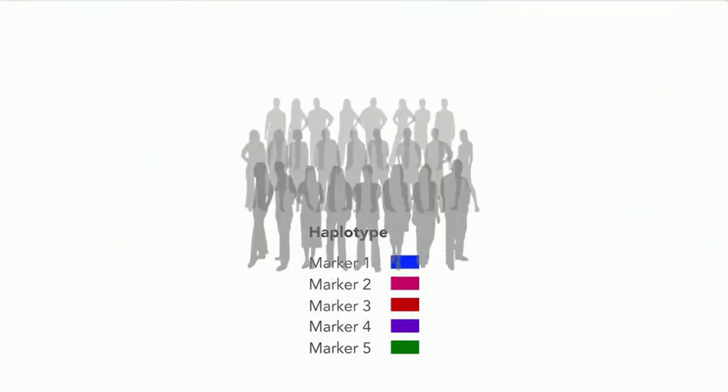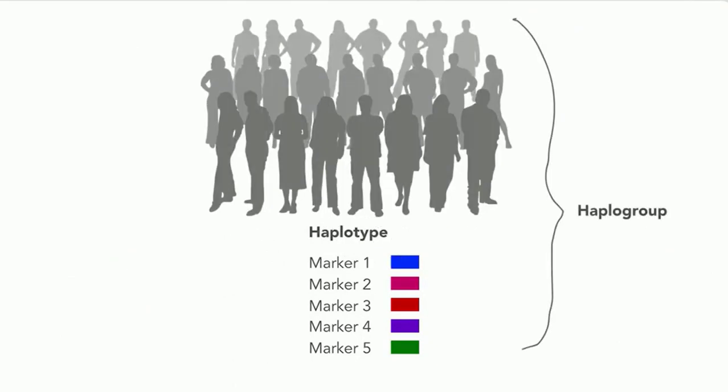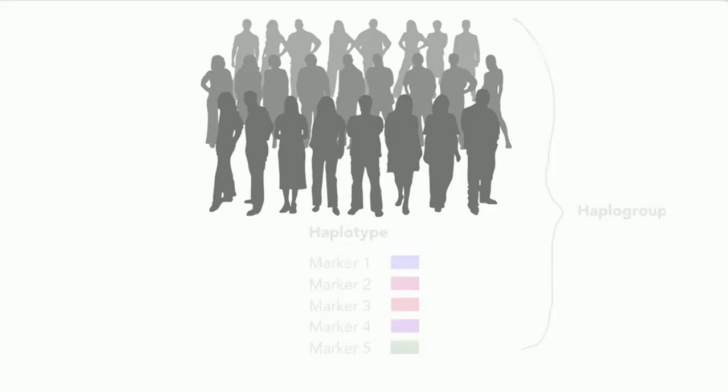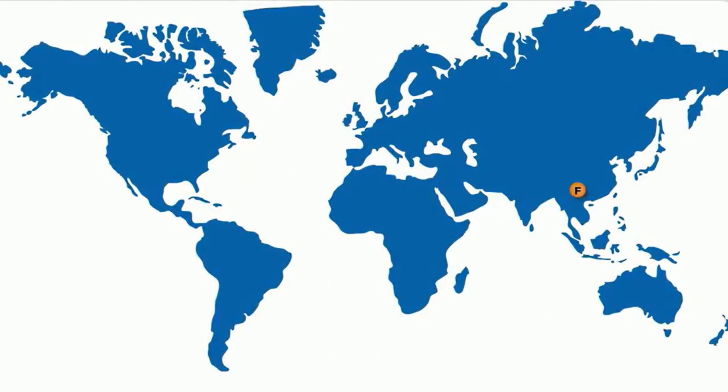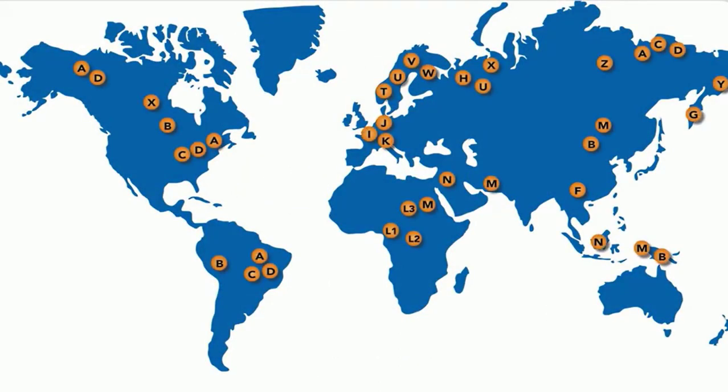People whose haplotypes have all or most of the same marker alleles in common belong to the same haplogroup. In the case of mitochondrial and Y-chromosome DNA, different haplogroups have been traced back to specific geographic regions around the world.